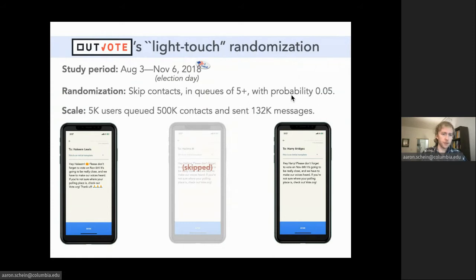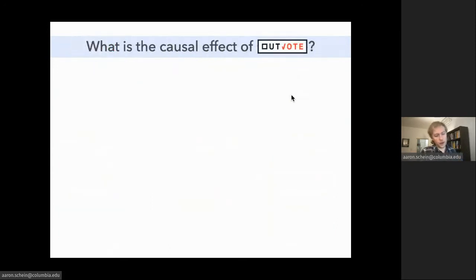During this time, 5,000 unique users queued around 500,000 contacts that were subject to this randomization. Ultimately, those users sent about 132,000 messages. We want to use this randomization scheme to assess the causal effect of users' messages.